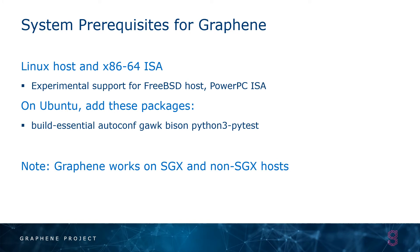Graphene currently requires a Linux host running on the x86-64 instruction set architecture. We do have experimental support for FreeBSD hosts as well as the PowerPC architecture, and more we hope to support in the future, but these are not as well maintained as Linux and x86. On Ubuntu, there are a few additional packages that you need to compile, but they're relatively minimal. I will also note that Graphene works both for running code in enclaves as well as running in a contained environment on a regular Linux host.